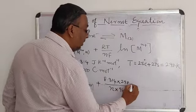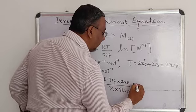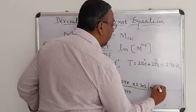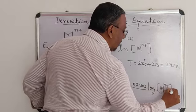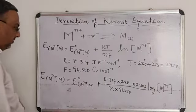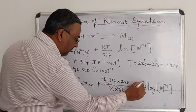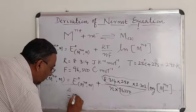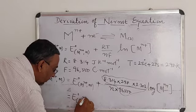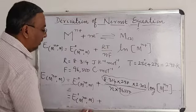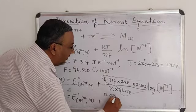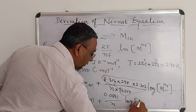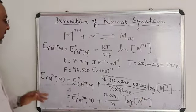Substituting these values into the equation: ln is converted as 2.303 × log. On simplifying 8.314 × 298 / 96,500, it becomes 0.0591. Therefore the equation becomes: E = E° + (0.0591/N) × log[M^n+]. This is the simplified numerical form used at 25°C.